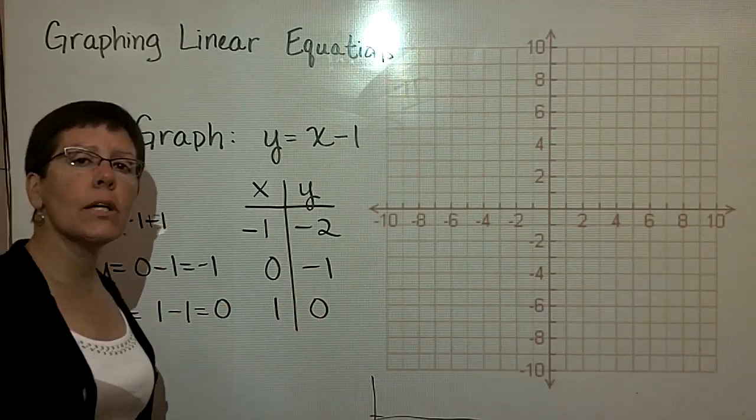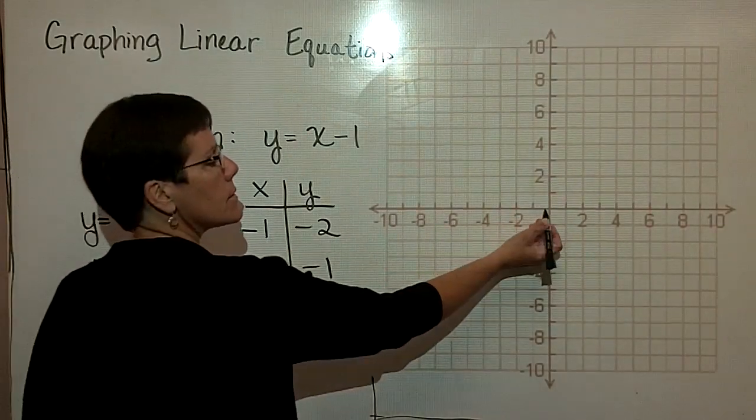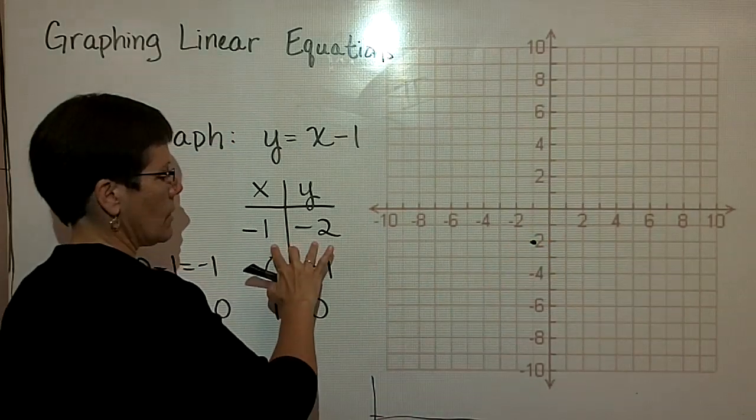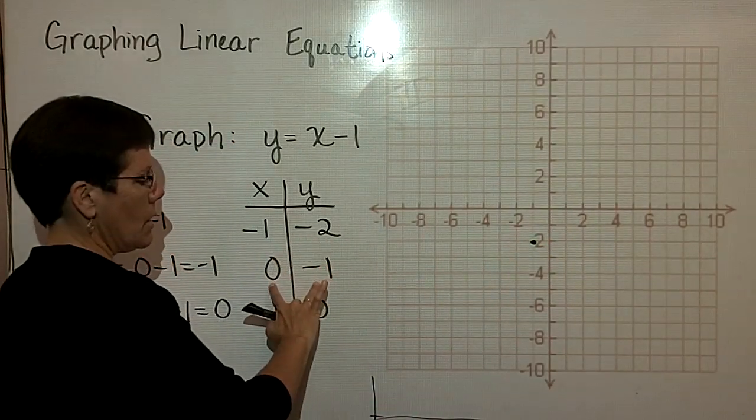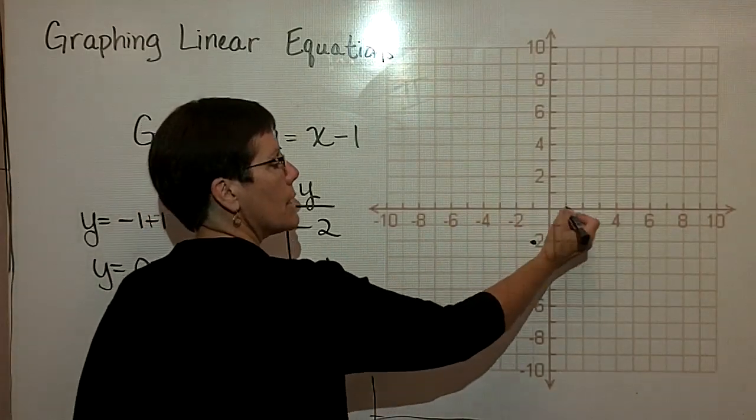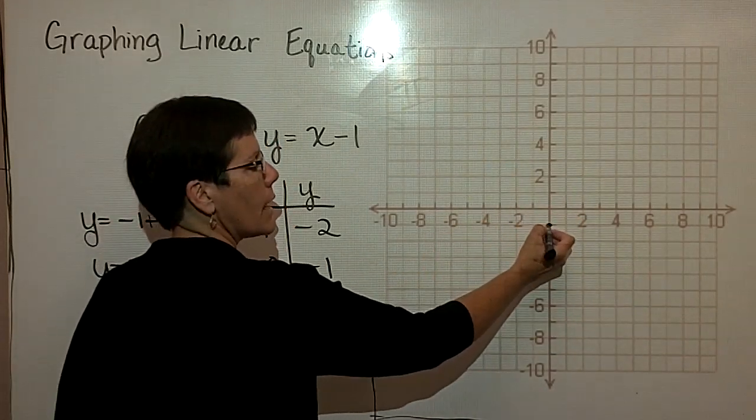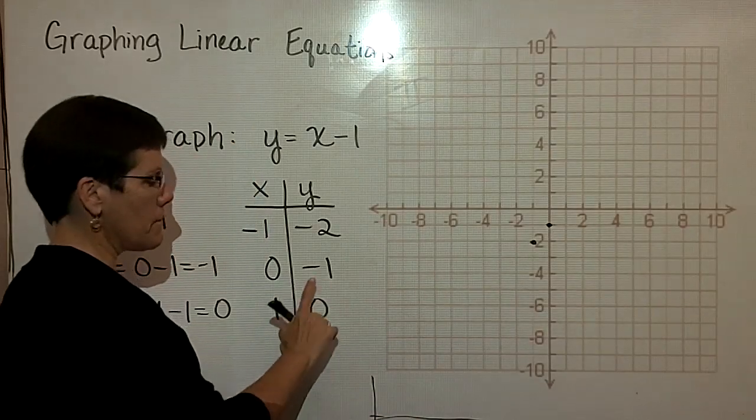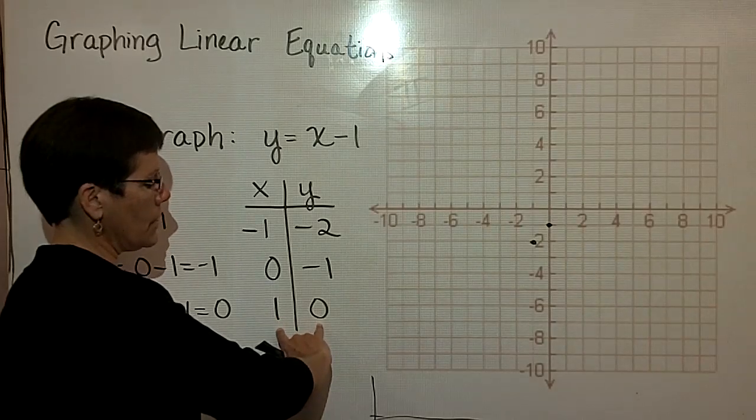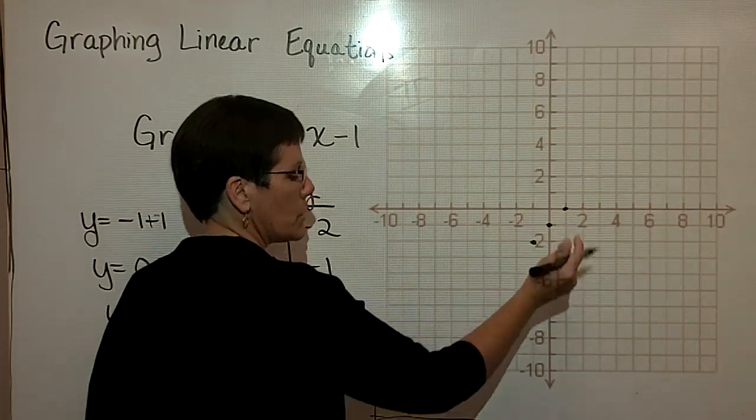I now have three ordered pairs that I can plot on the rectangular coordinate system. The first one, x is a negative 1, and y is a negative 2. The next one, x is 0. That means I do not move in any direction on the x-axis when x is 0. But I go down a negative 1 on the y-axis. This ordered pair says, from the origin, go 1 over in the x direction, but don't move in the y direction. So I go over 1, and my y value is equal to 0.